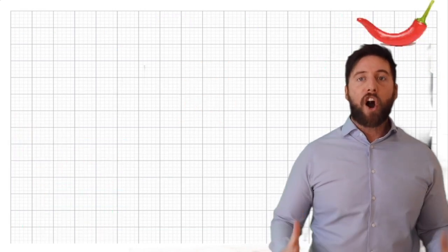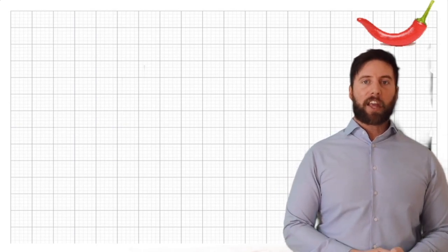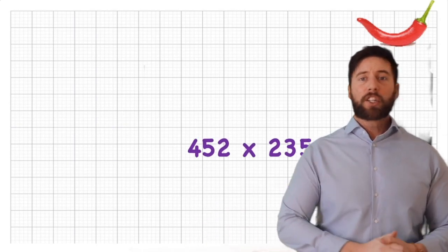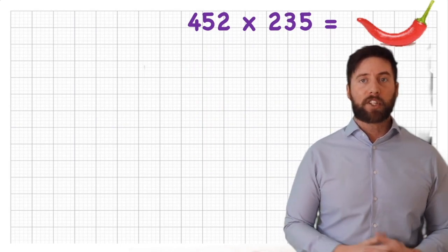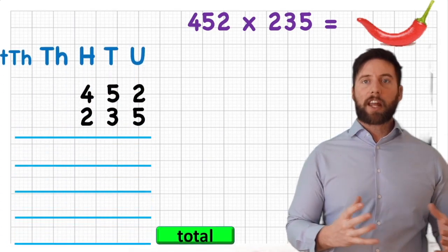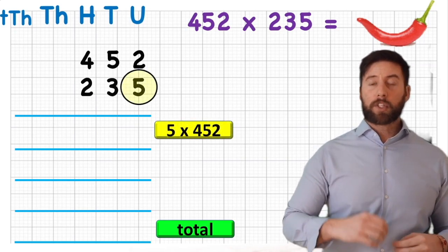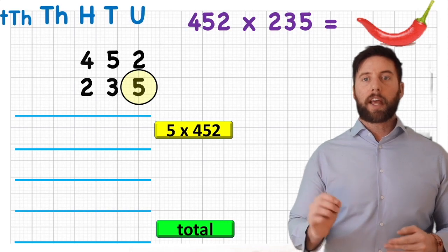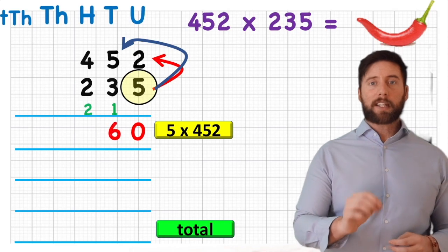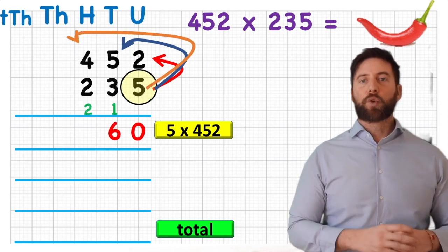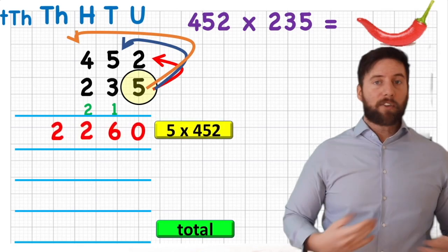Final stage — the red chili challenge — and this time we are going to make it harder because there's an extra element to understand. The question is 452 times 235. These are huge numbers, so we have to be really careful and precise. Just like before, we partition it. The first row is 5 times 452: 5 times 2 is 10, 5 times 5 is 25 plus the carried 1 is 26, 5 times 4 is 20 plus the carried 2 is 22. So 5 times 452 is 2260.